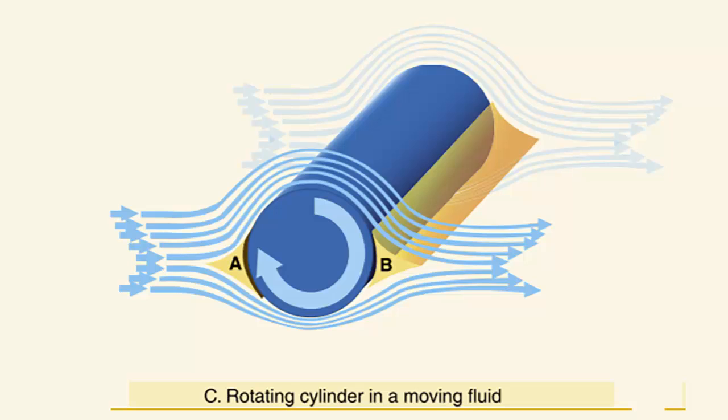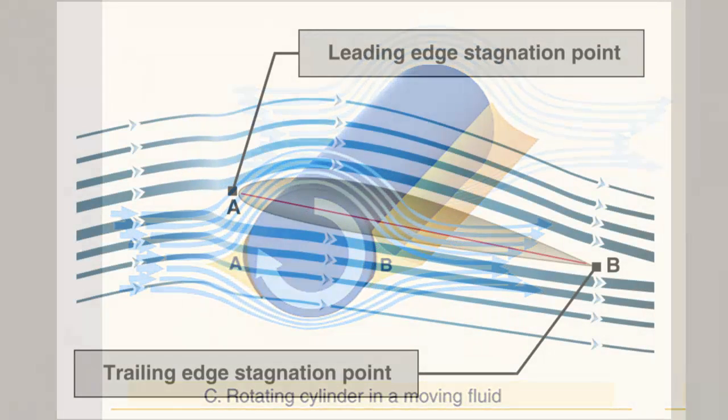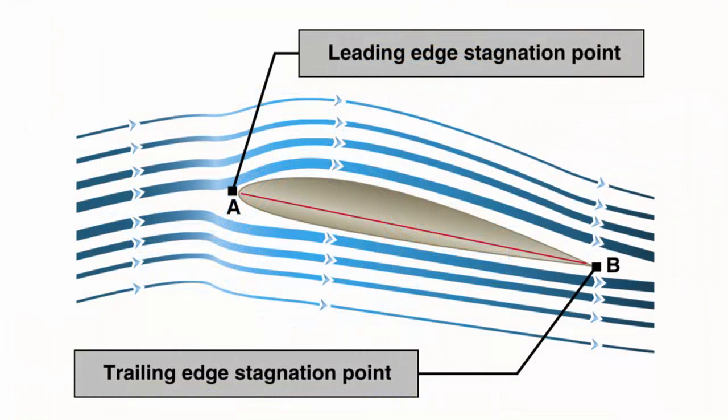Additionally, a stagnation point exists where the air stream impacts the front of the airfoil surface and splits. Some air goes over and some air goes under. Another stagnation point exists where the two air streams rejoin and resume at identical velocities. When viewed from the side, an upwash is created ahead of the airfoil and a downwash at the rear. The highest velocity is at the top of the airfoil with the lowest velocity at the bottom.